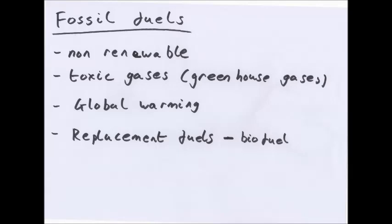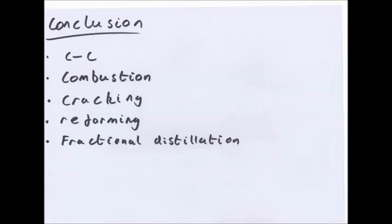That's actually all there is. It's a very short video. Not much on alkanes. It's very simple. Conclusion. C-C single bond. They undergo combustion, cracking and reforming. And fractional distillation. That's all you need to know. So, thanks for watching. And goodbye.